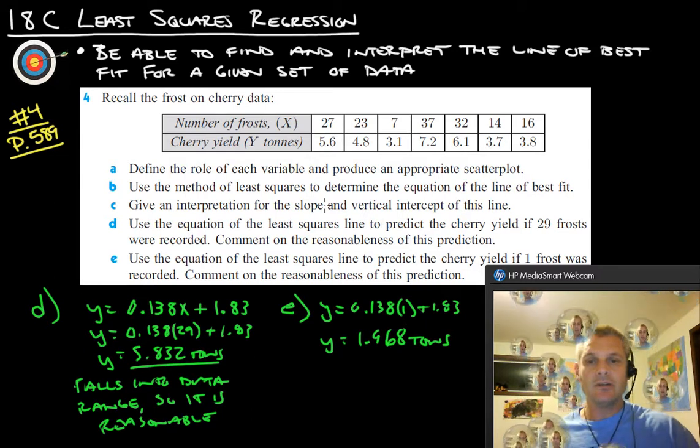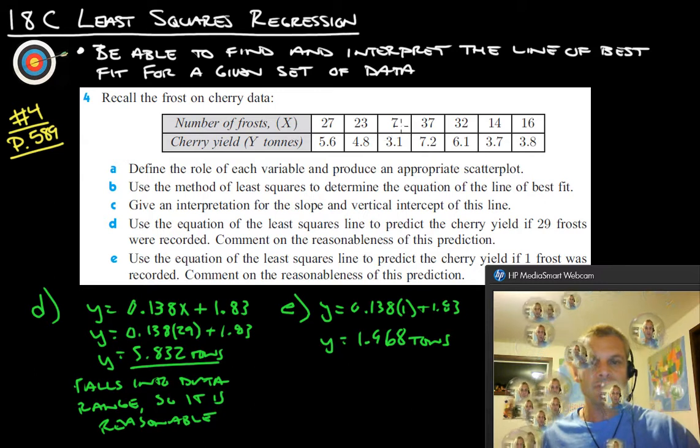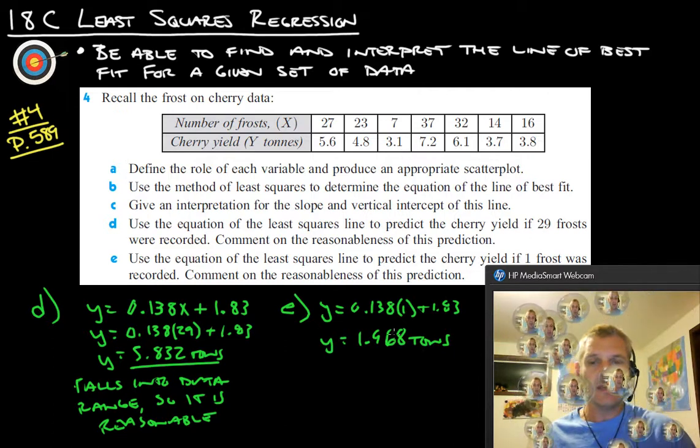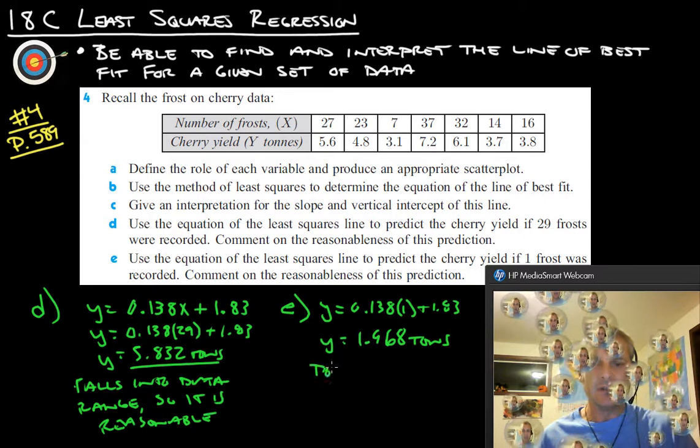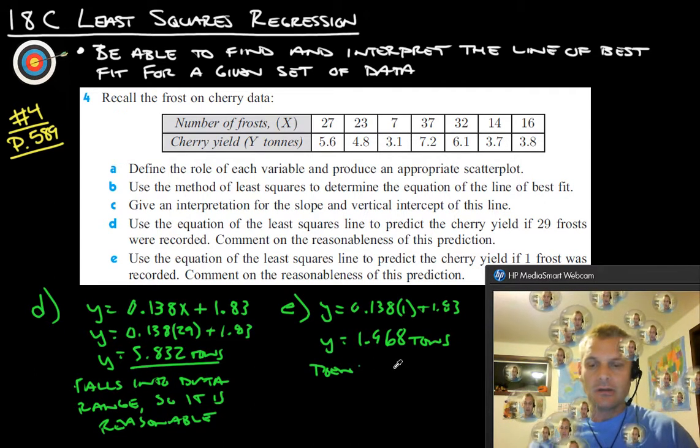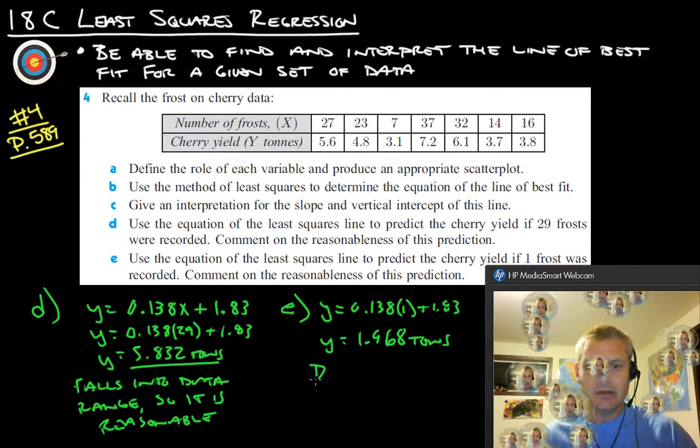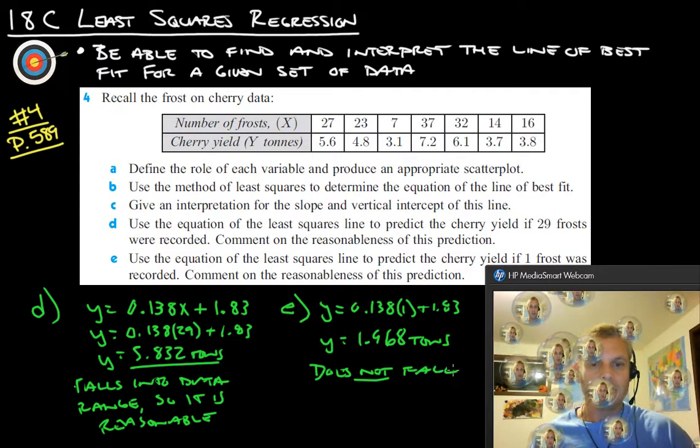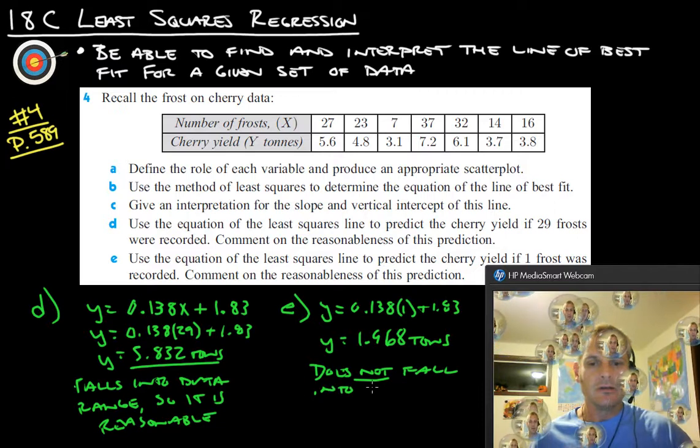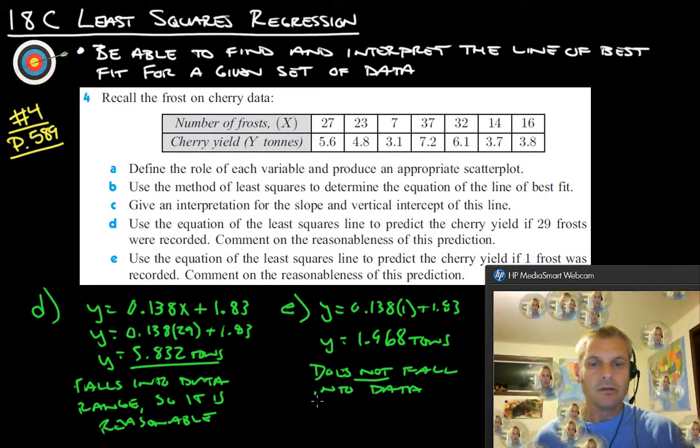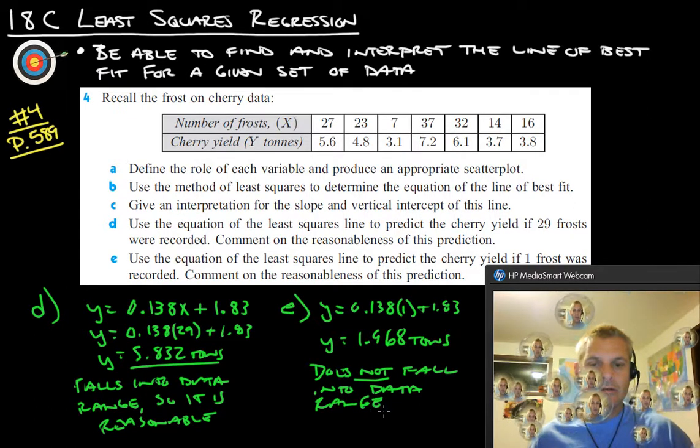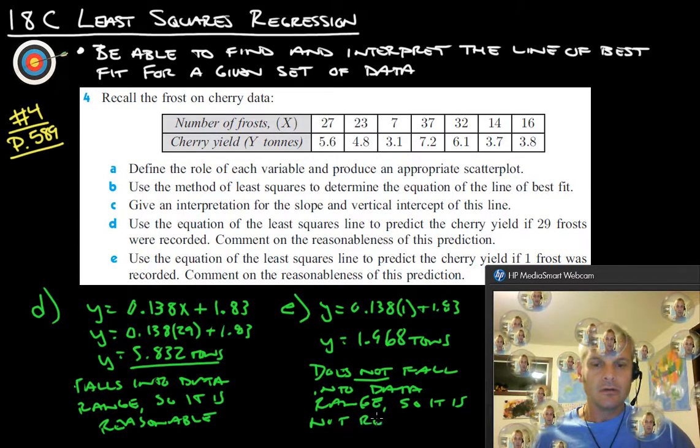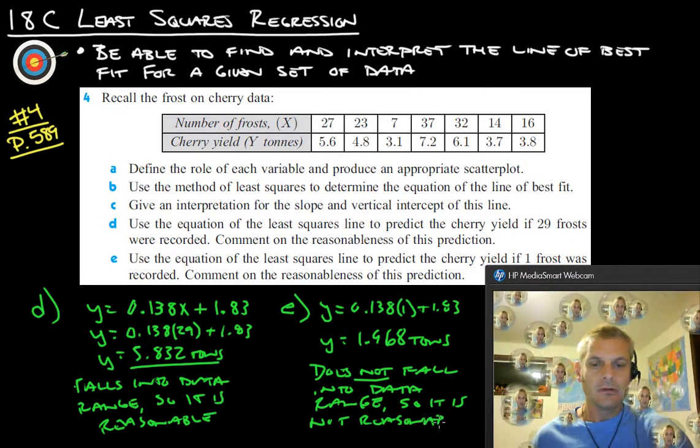And on this one over here, if you'll notice, the 1 actually is too small. The smallest we have for the number of frosts is 7. And then the smallest tons is 3.1. And that doesn't fit into either data range. So it does not fall into data range. Does not fall into data range. So it is not reasonable.